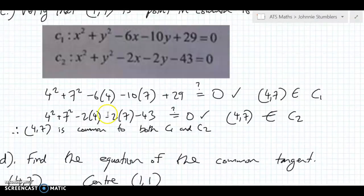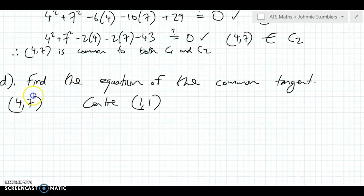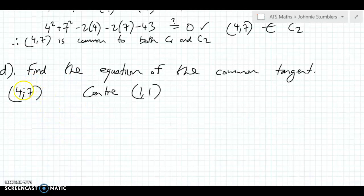Now, where are we? We're looking for the equation of the common tangent here. What do we know? We know that 4, 7 is the point where these circles touch.